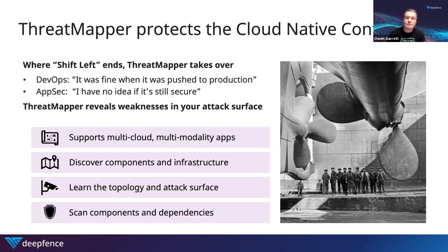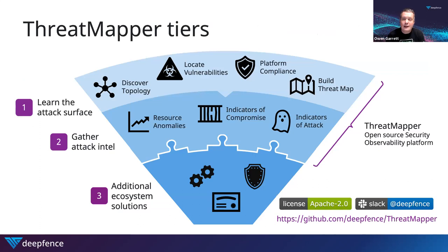The ThreatMapper product is built in a set of tiers. It begins by learning the attack surface you're exposing in your applications, whether running in public, private clouds, or a combination of both — investigating that environment, interrogating it for workloads and containers, and looking at network traffic to discover the topology of those applications. Then scanning those applications, pulling manifests, and matching those against vulnerability lists. The final part of the first stage is to put this information together to build a ThreatMap — the actionable information you can use to work with your development team to minimize risk.